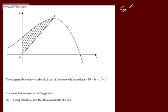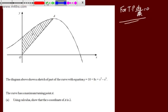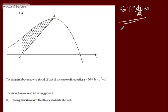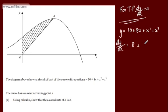For a turning point, dy/dx equals 0. If we draw a tangent at a maximum, we get a gradient of 0. So we differentiate y equals 10 plus 8x plus x squared minus x cubed: dy/dx equals 8 plus 2x minus 3x squared. Setting this to 0, we have 8 plus 2x minus 3x squared equals 0.